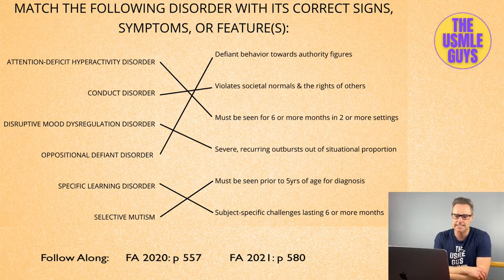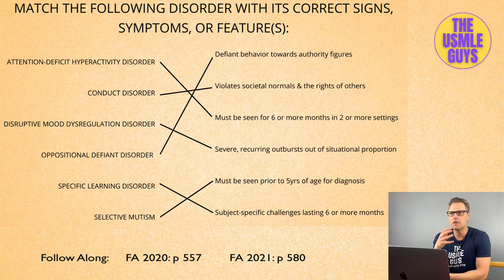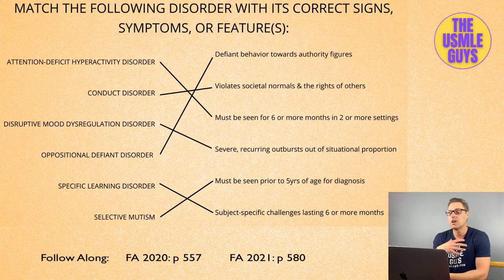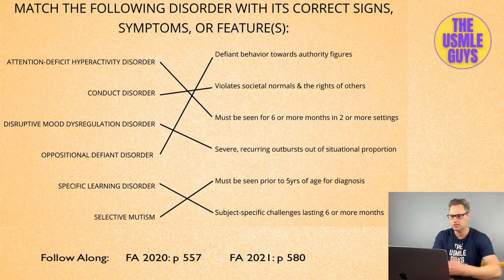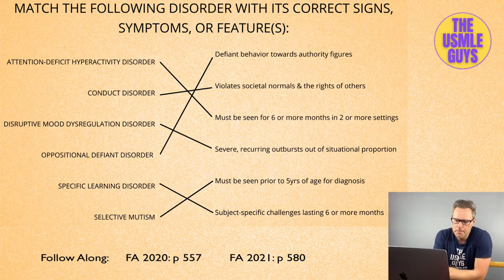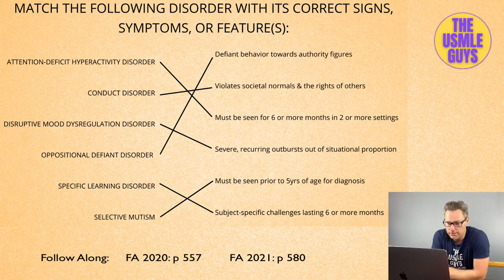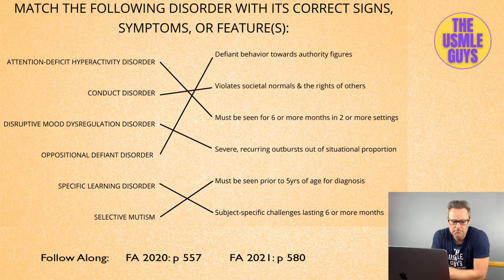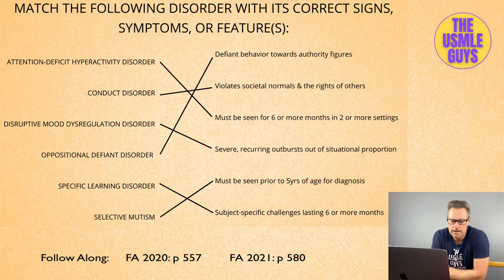Oppositional defiant disorder is next. The main finding is an ongoing pattern of anger, irritability, and argumentativeness towards figures of authority — teachers, police, parents, grandparents. They may also become defiant and vindictive against these authority figures. They're not just ignoring them — they could go as far as becoming vindictive, so keep that in mind if it pops up in a vignette.